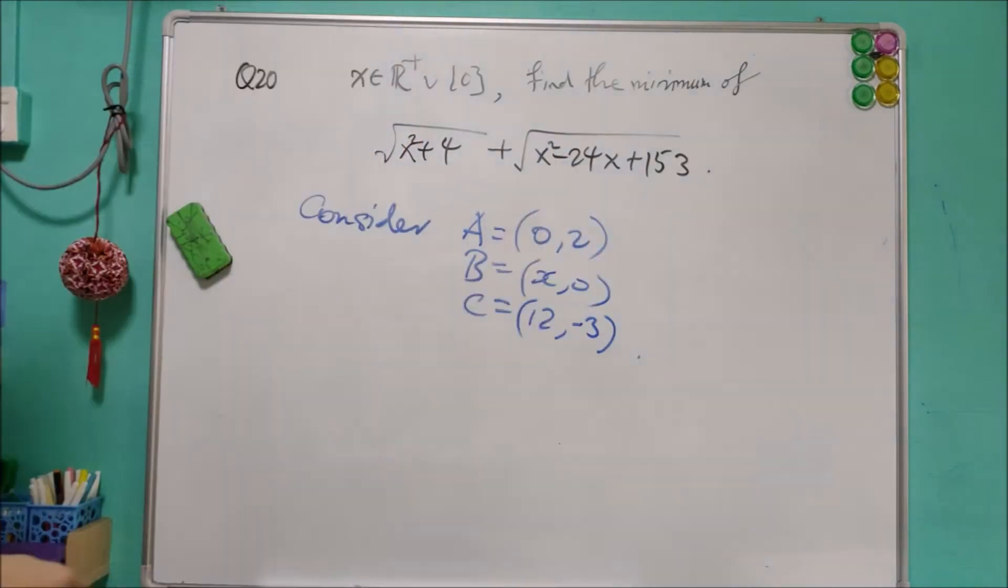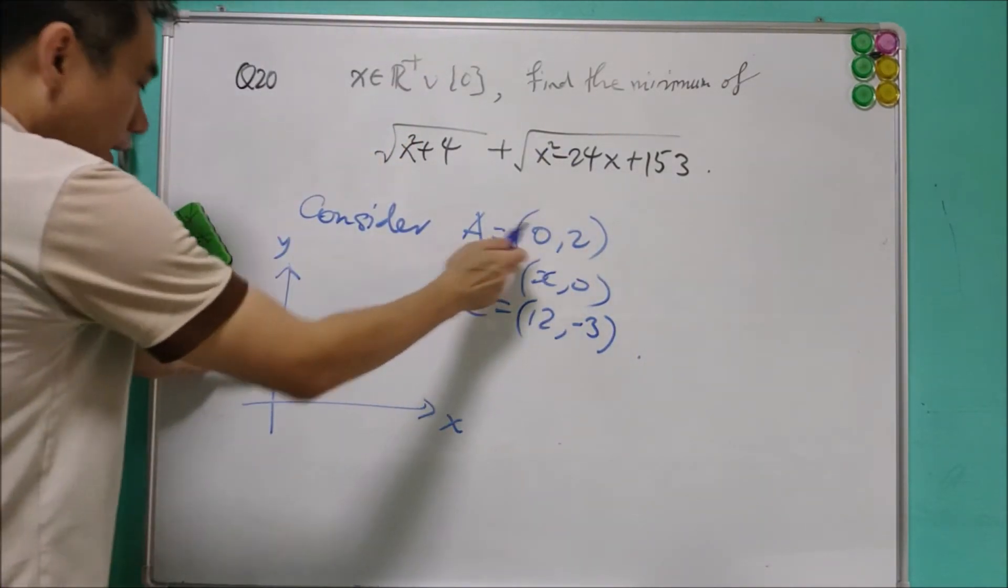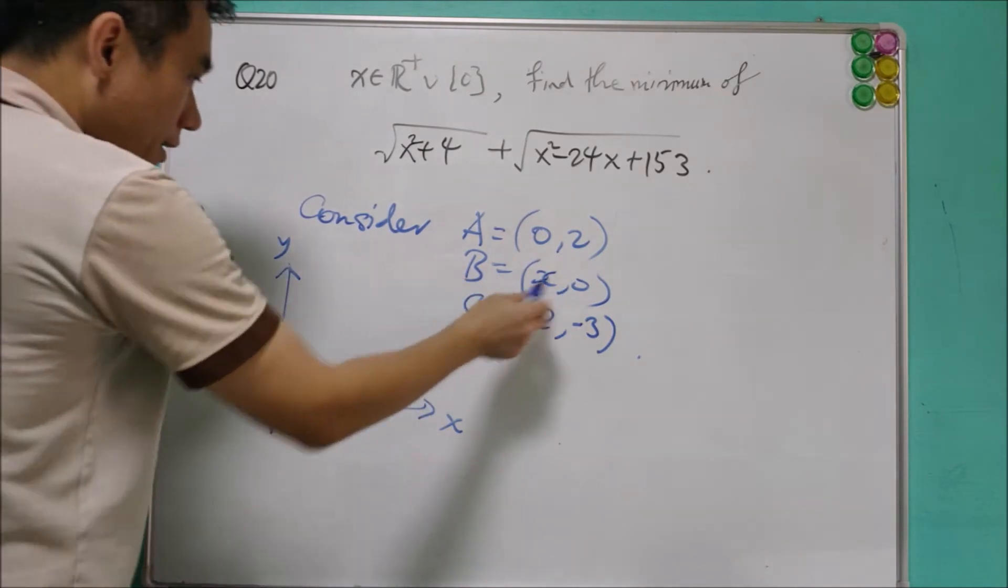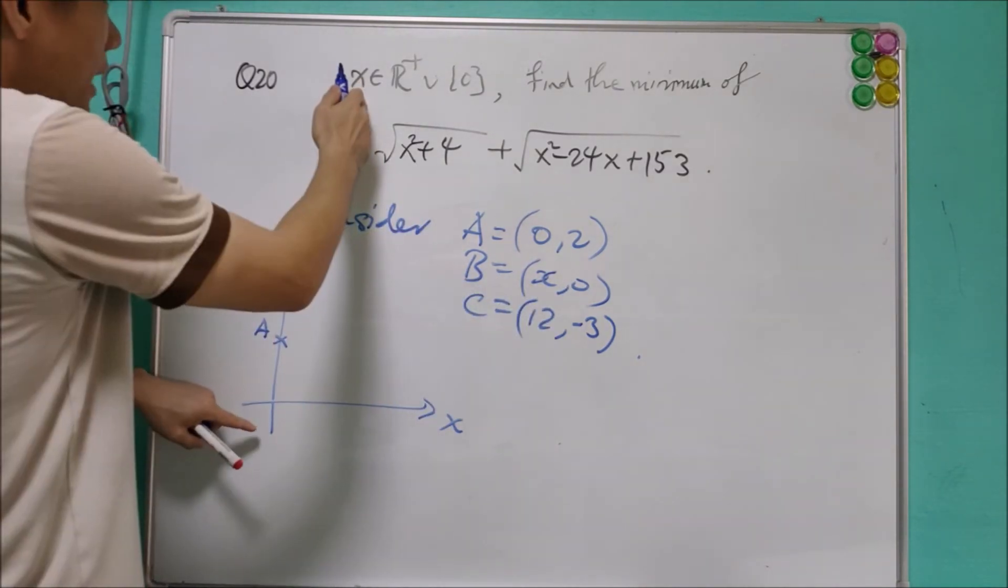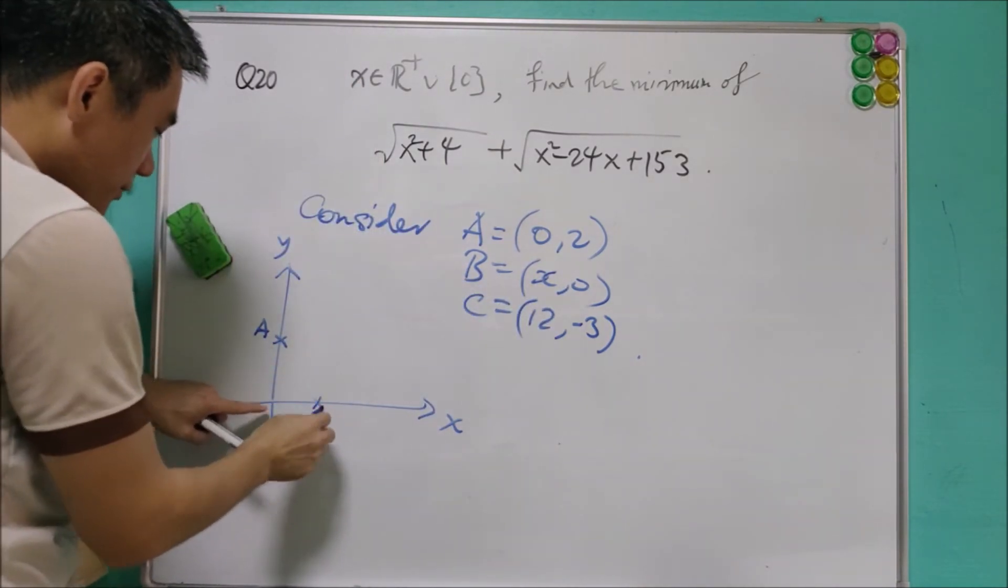It will mean that A is a point here, 0, 2. And B is somewhere here. Because x is non-negative, x should be some point here.